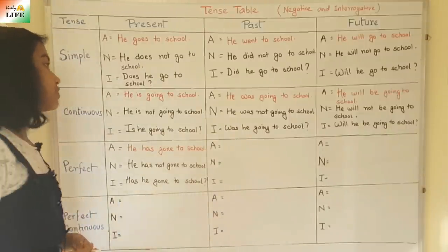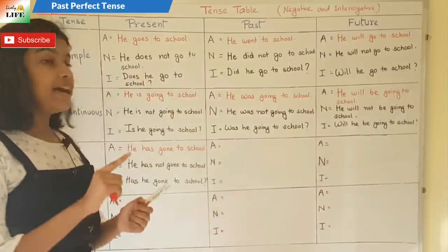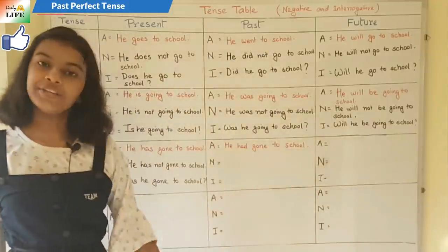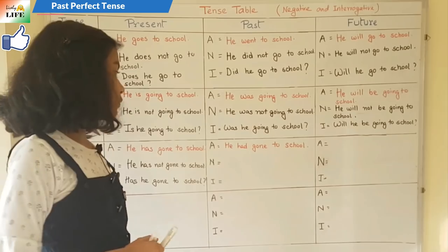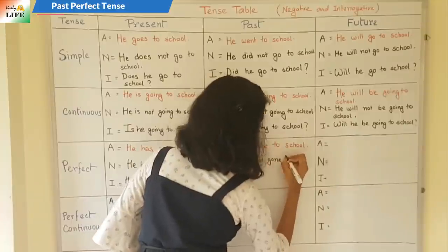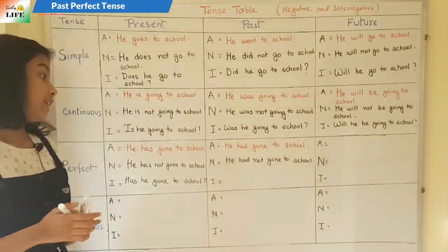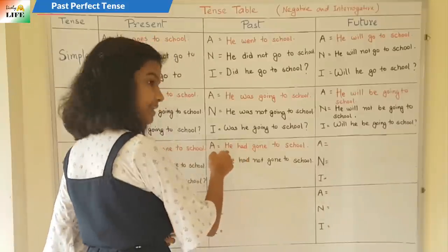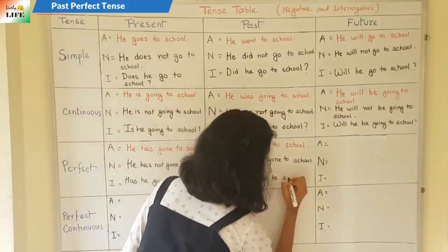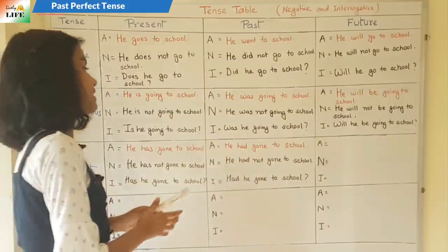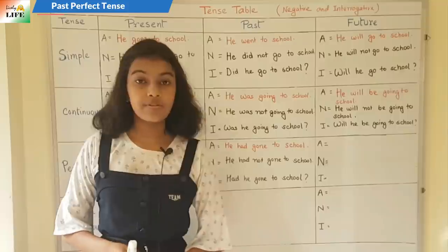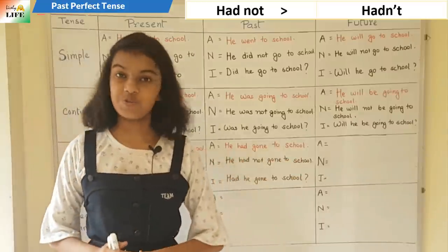Now past perfect tense. The affirmative form is: 'He had gone to school.' For the negative, we write 'not' after the helping verb 'had': 'He had not gone to school.' For the interrogative, interchange the first two words: 'Had he gone to school?' The three forms: affirmative — 'He had gone to school'; negative — 'He had not gone to school'; interrogative — 'Had he gone to school?' The short form of had not is hadn't, so: 'He hadn't gone to school.'